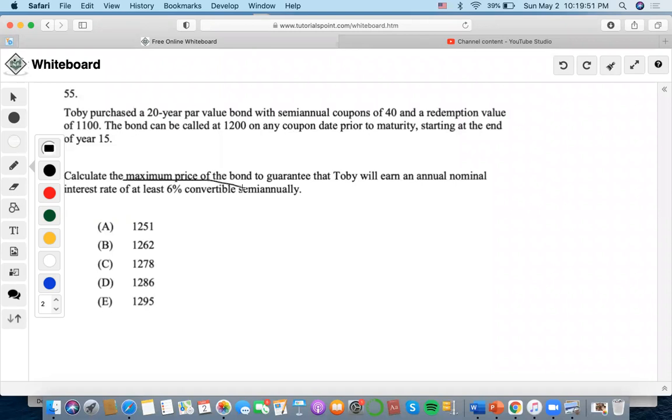Calculate the maximum price of the bond to guarantee that Toby will earn an annual nominal interest rate of 6% semi-annually.